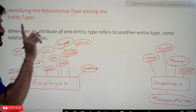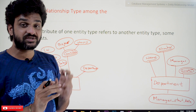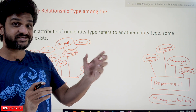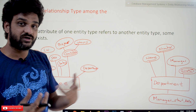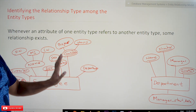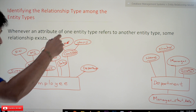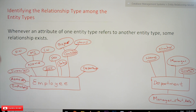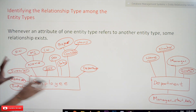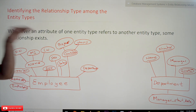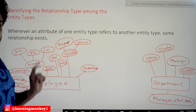We are going to cover this concept as thoroughly as possible because it is very important to understand. This understanding is going to give you a lot of insight about databases. So, whenever an attribute of one entity type refers to another entity type, some relationship exists. Between employee and department, can you guess which attribute is referring to the other entity type? Let me pause for a while so you can take a guess.